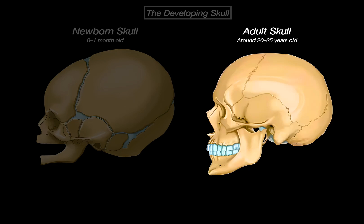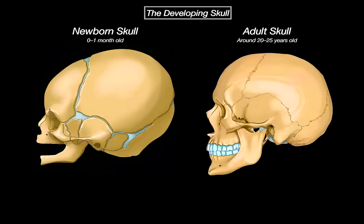Somewhere along this timeline, from infancy through adolescence, these gaps gradually close and the bones of the skull begin to fuse. Some of these fusions happen early, while others, like the closure of the sphenooccipital synchondrosis at the base of the skull, don't happen until late adolescence or even early adulthood.